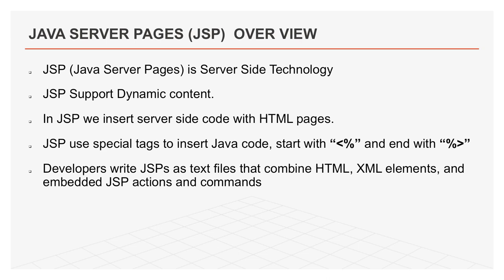Normally we use HTML as the view or front-end, and Java files for server-side coding or business logic. But in JSP, we can insert server-side code in HTML using special JSP tags. Most of these tags start with angle bracket percent and end with percent and closing angle bracket. JSP components are a type of Java servlet designed to fulfill the role of user interface for Java web applications. Developers write JSP as text files that combine HTML, XML elements, and embedded JSP actions and commands.